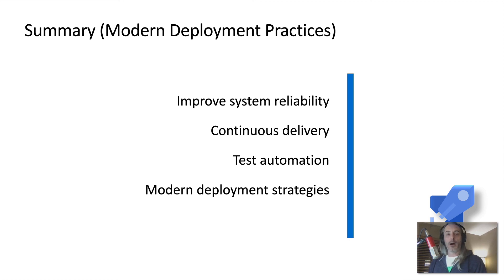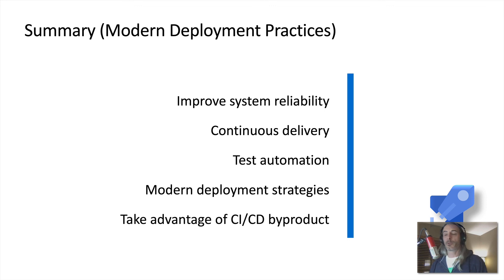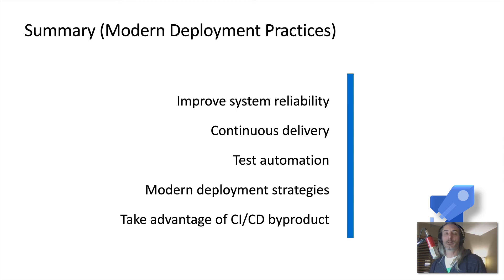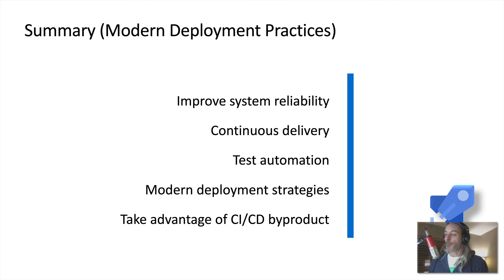All of these things — we saw the numbers — these are the ways that modern thinking companies and thought leaders in our industry are doing things. These are modern deployment strategies and it really isn't a situation where we need to be doing things like the epic deployment. That's not sustainable, there's just a better way, something we have to take advantage of. And system reliability is just the byproduct of having CI/CD in place.